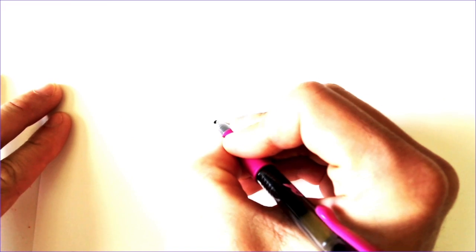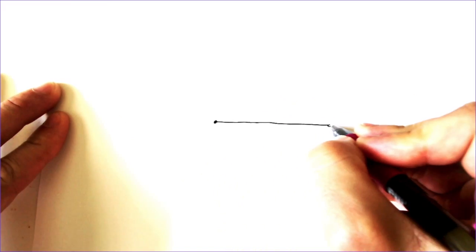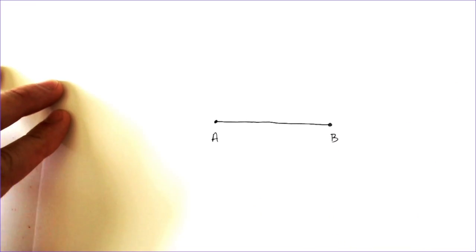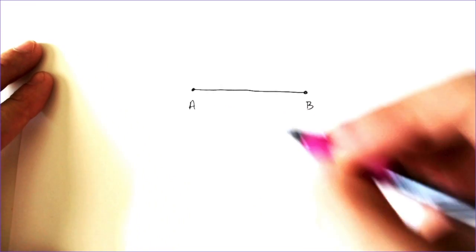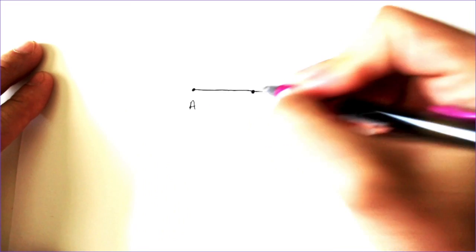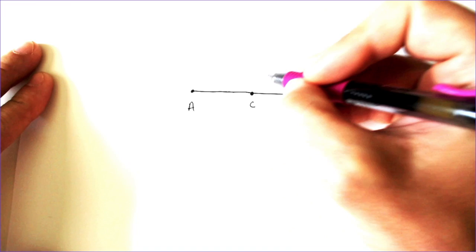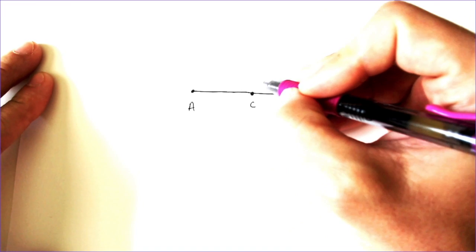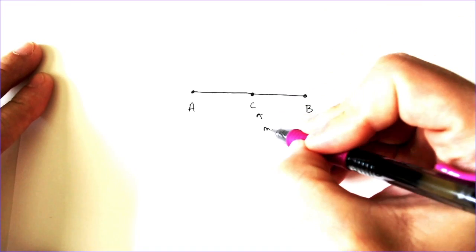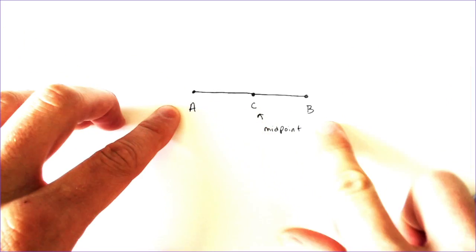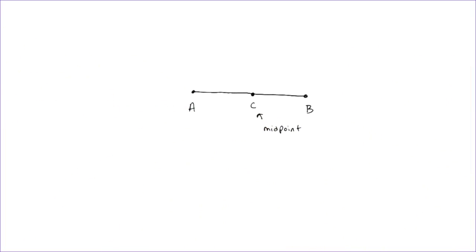Let's say you were given a line segment AB, and on this line segment, if you were told that there is a midpoint, that would be — we can call it point C. If point C is the midpoint, then we would know that that is the middle of A to B. And you would have to be told that information; you can't just assume it.